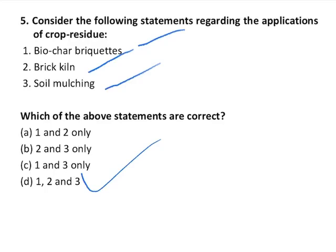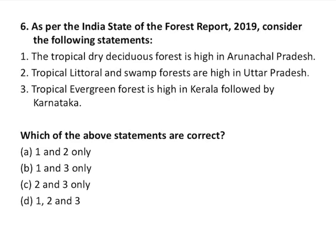Question number six is on the State of Forest Report 2019. The first statement says tropical dry deciduous forest is highest in Arunachal Pradesh — correct. The second says tropical littoral and swamp forests are highest in Uttar Pradesh — also correct. The third says tropical evergreen forest is highest in Kerala followed by Karnataka — this is wrong, because tropical evergreen forest is highest in Karnataka, followed by Kerala. So only statements one and two are correct, option A.